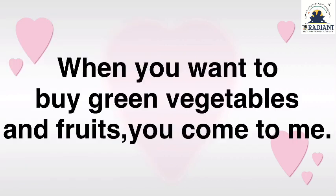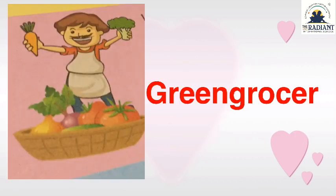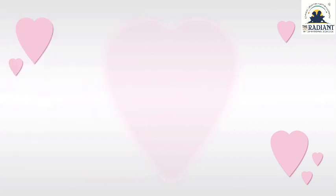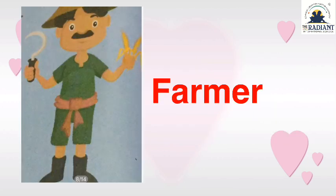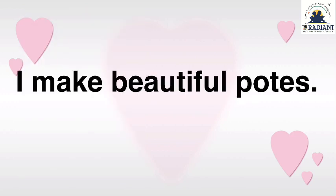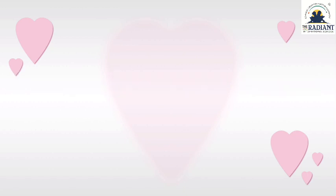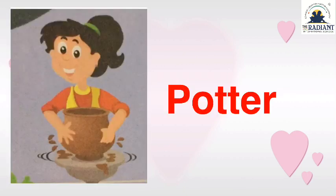Then, when you go to buy green vegetables and fruits, you come to me. Green grocer. Next, I grow crops so that you get cereals, fruits and vegetables. Farmer. I am a farmer. I make beautiful pots. Who am I? Potter. I am a potter.